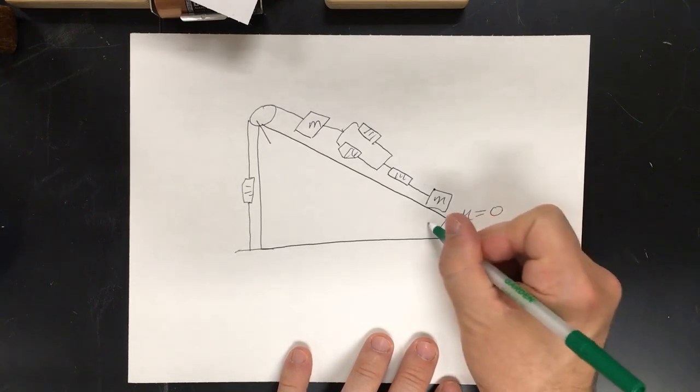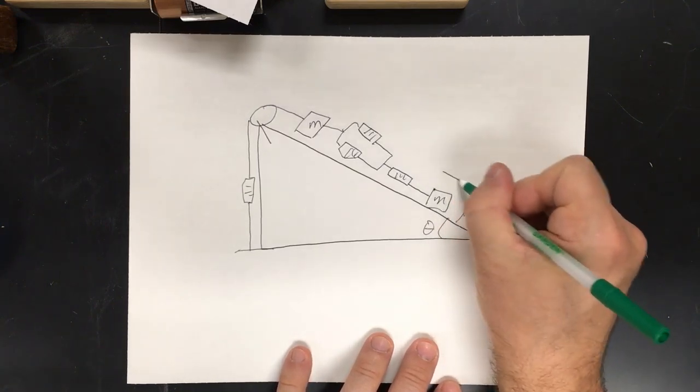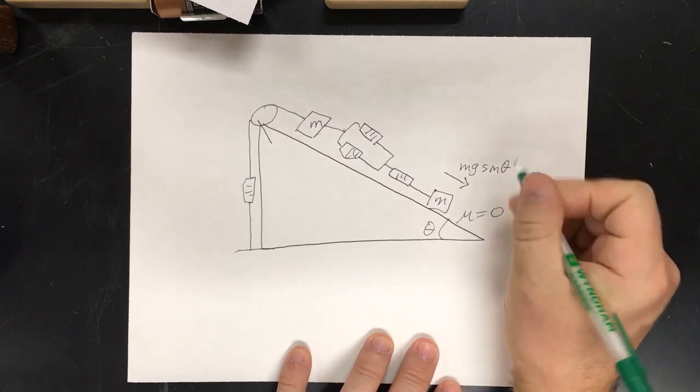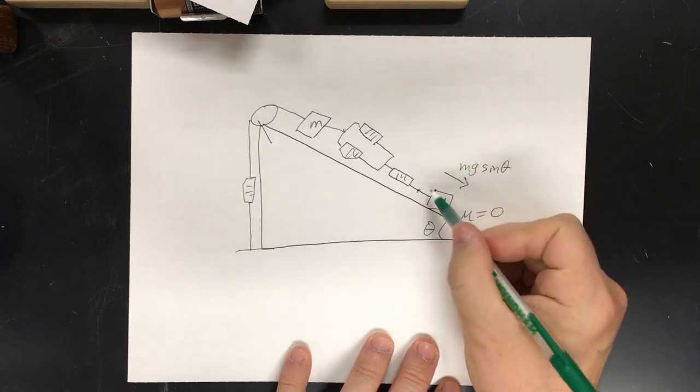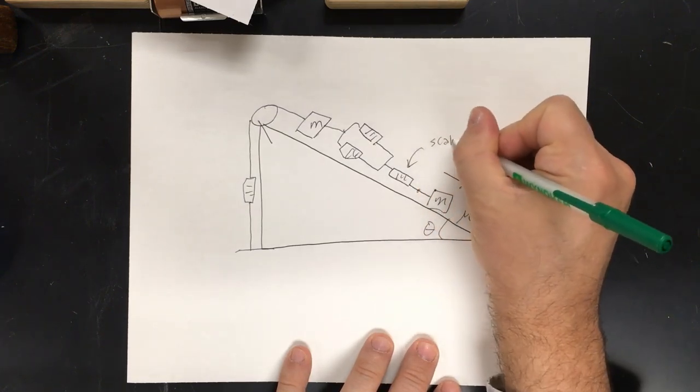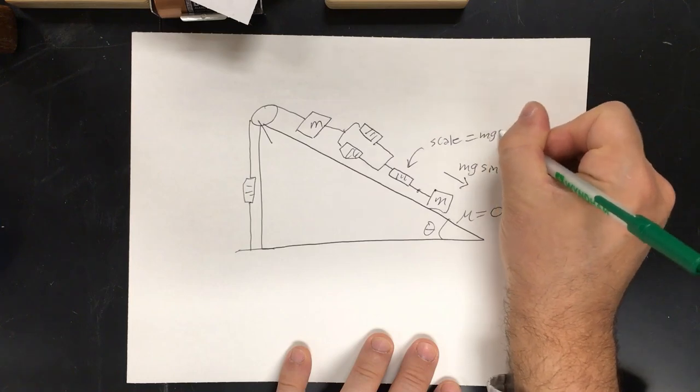Now, this one, because this is theta, then the force down the ramp must be mg sine theta. Then, this point right here, there must be mg sine theta, mg sine theta. So, the scale reads mg sine theta.